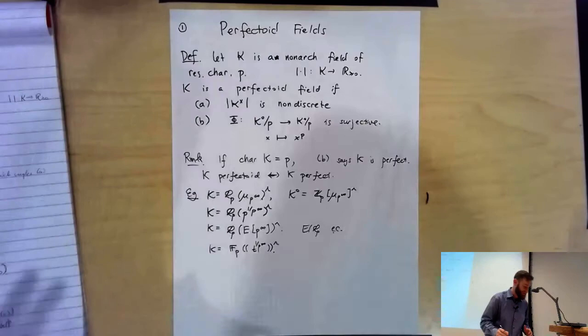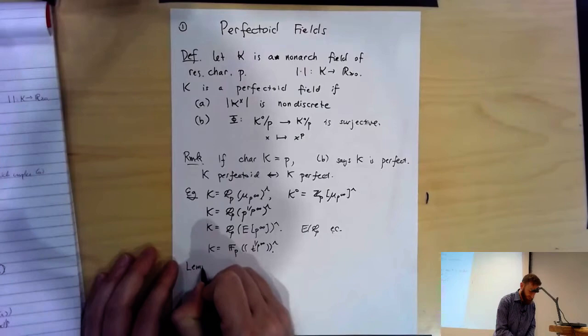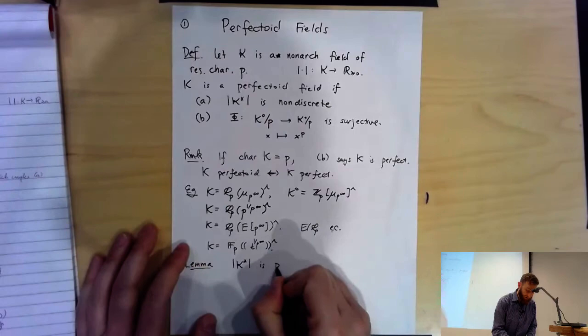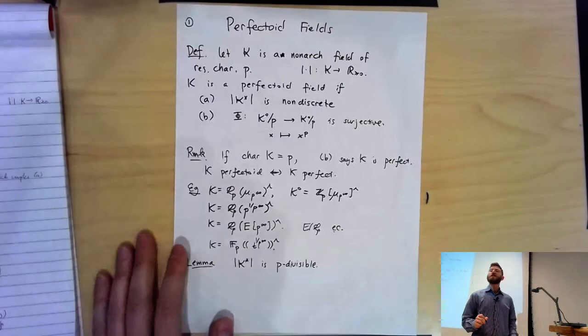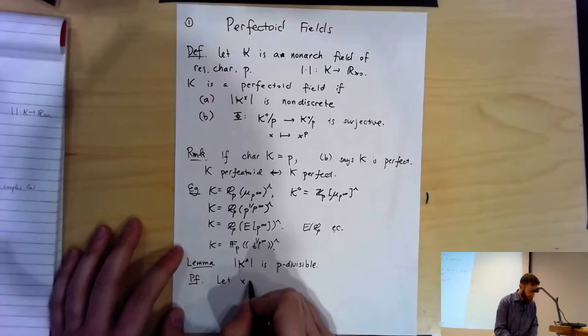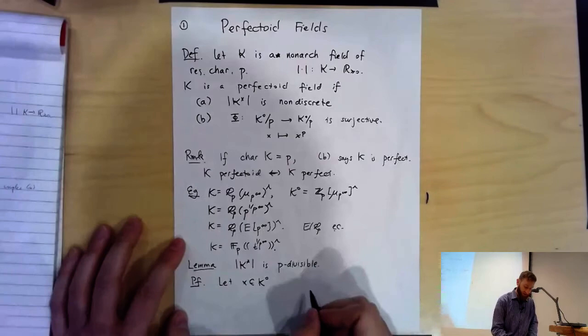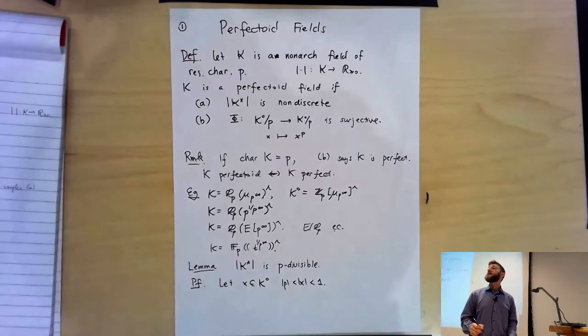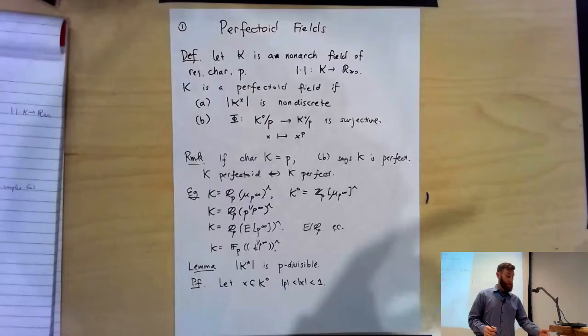A little lemma: whatever the value group is — some subgroup of the positive real numbers — this group is P-divisible. You can always extract a P-th root from an element of the value group. To prove this, choose an element X in the ring of integers with value lying strictly between P and 1 — possible because part A says the valuation is non-discrete, so there has to be something in between.